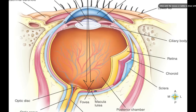However, the cones don't work very well in the dark. They need a lot more light than the rods do, so we have very bad color perception when it's dark because cones need that added light to work at their maximum capacity.